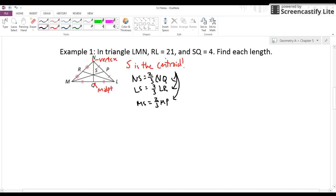We have two parts of this problem. Here's part A. We're going to find LS. If I know RL is 21 and SQ is 4, how do I find LS?